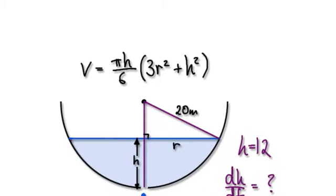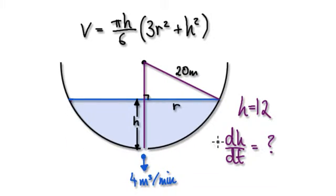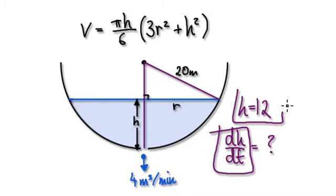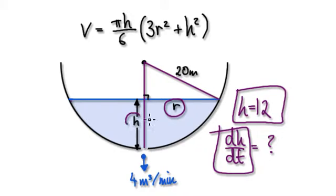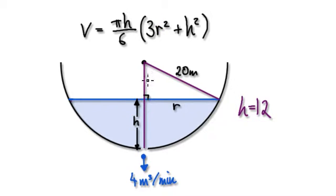Following on from the previous video, we wanted to know dh/dt at the precise moment in time when the water level was at 12 meters. What we realized was that we don't need the r here, because r is being dictated by h. So we can get rid of r and rewrite r in terms of h. In order to do that, we would use Pythagoras to get rid of the r.